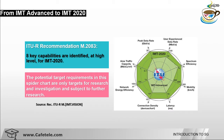These 8 key capabilities are the most important ones, and we can see them in the spider diagram. In this spider diagram, each category allows us to compare IMT Advanced with IMT-2020 and see how much improvement was achieved from one generation to the next.